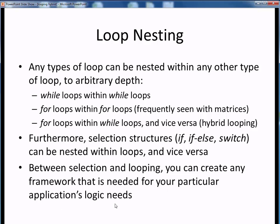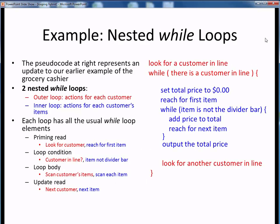Let's see a few examples of this. For starters, here's an enhancement of our original grocery checker example using nested while loops. As a refresher, here on the right in blue is the pseudocode we examine to express the looping logic to scan one customer's grocery items — the steps we take for any one individual customer. Now let's enhance this to deal with any unknown number of customers in line by wrapping an outer while loop around our original inner while loop. These added steps, shown in red, are performed for each additional customer in line.